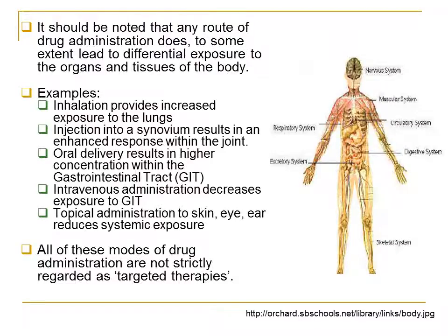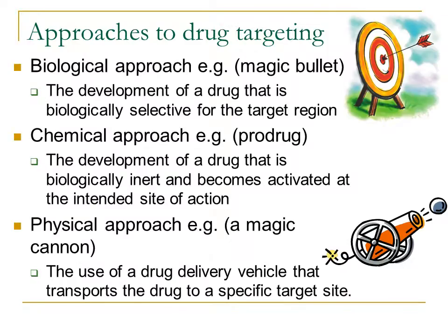Ointments, for example, can have a more site-specific treatment, although not all modes of drug administration are strictly regarded as targeted therapies. Approaches to drug targeting include the biological approach — called the 'magic bullet' — which involves developing a drug that is biologically selective for the target region. The chemical approach uses pro-drugs: drugs that are biologically inert and become activated at the intended site of action. The physical approach, called the 'magic cannon', uses a drug delivery vehicle to transport the drug to the specific site.